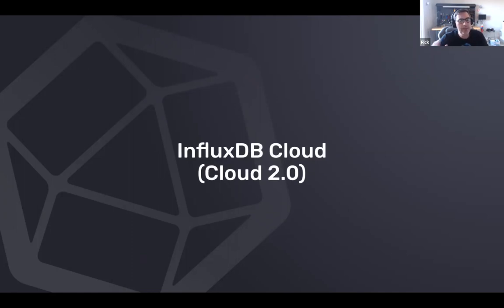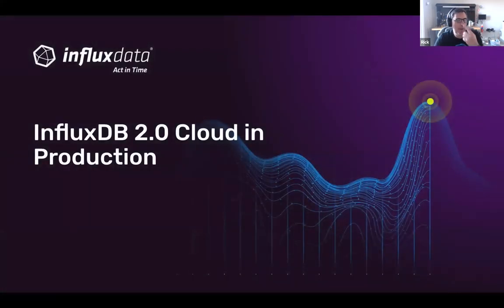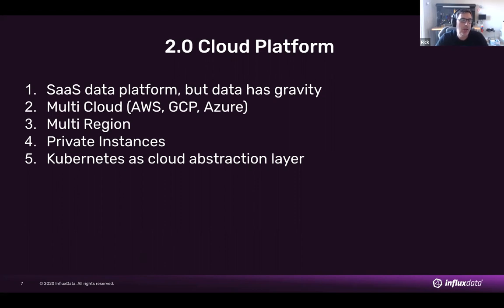The main product I focus on in my role is called InfluxDB Cloud — informally we call it Cloud 2 because there was a Cloud 1 product. Cloud 2 is a fully SaaS data platform: you sign up for an account, you don't host any servers yourself, we do all the server maintenance and hosting. The thing about a database is there's this notion that customers' data has gravity — not in a marketing sense, it's almost more literal than figurative.